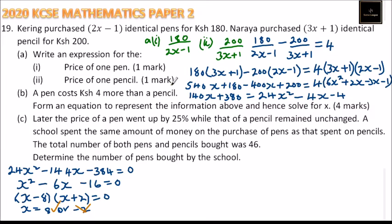First, find the cost of pen. It is 180 divided by 15, which equals 12. The cost of pen went up by 25%, so the new price is 12 divided by 100 times 125, which equals 15. That's the new price of pen.